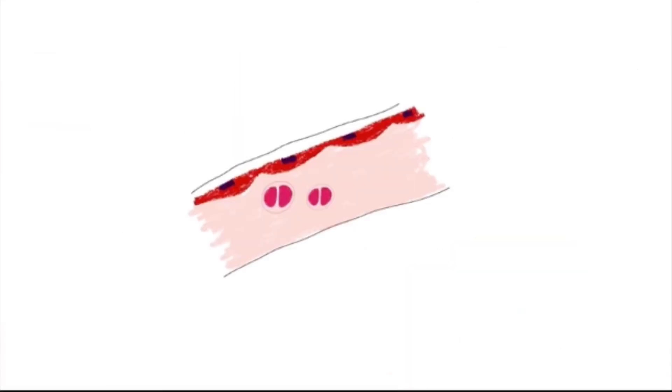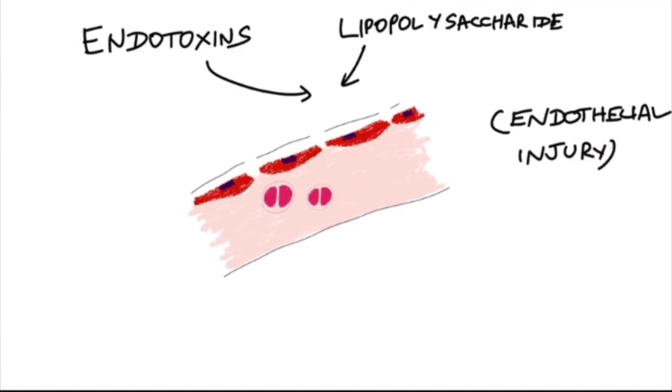Once in the bloodstream, with the help of factors like endotoxins and lipopolysaccharide of Meningococcus, which are virulence factors, it can damage the endothelium of the blood vessels, leading to endothelial injury. This leads to excess fluid loss because of increased vascular permeability, leading to hypovolemic shock.